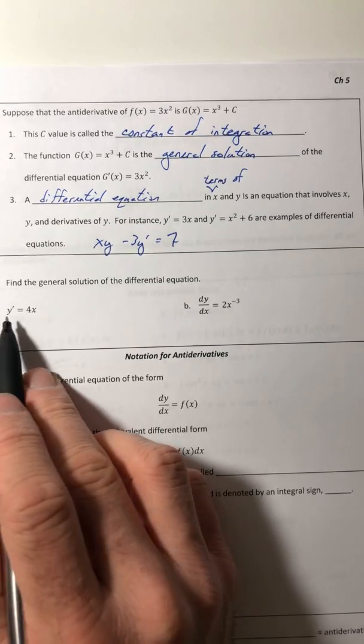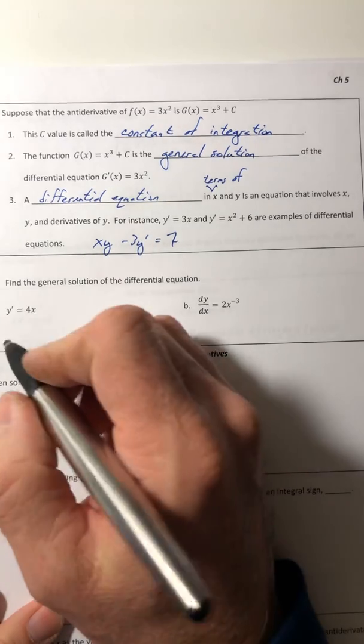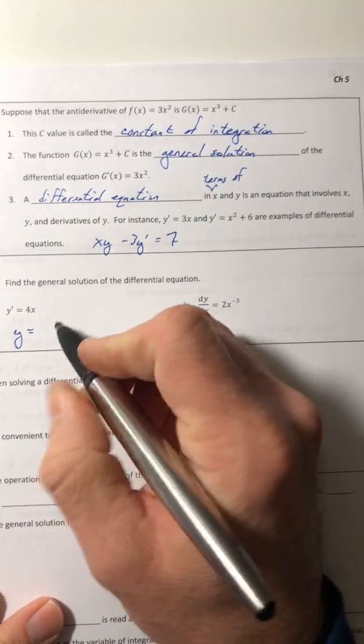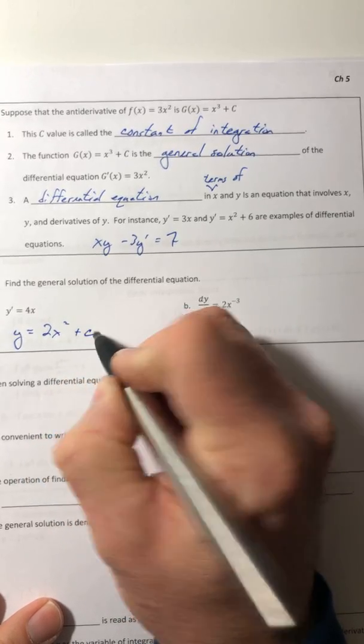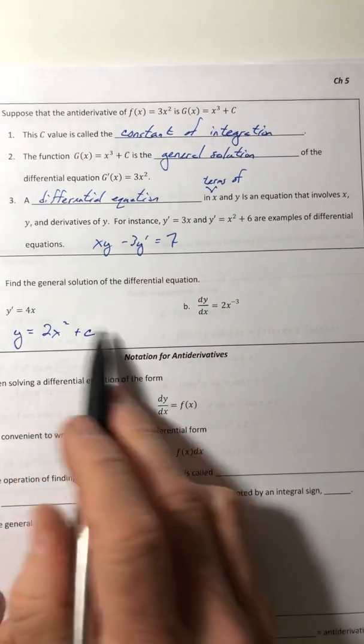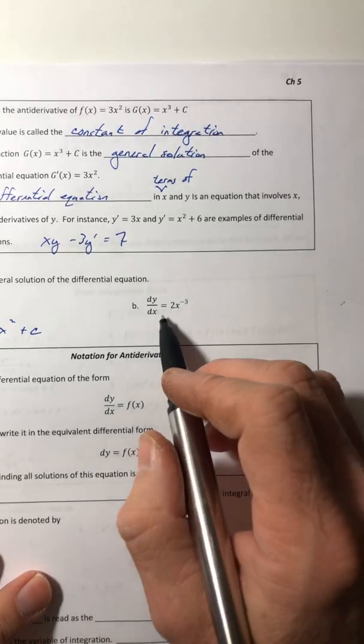So find the general solution. So whose derivative is 4x? Well, that would have to be 2x squared, and then put your plus c. So that plus c, you're always going to put it.